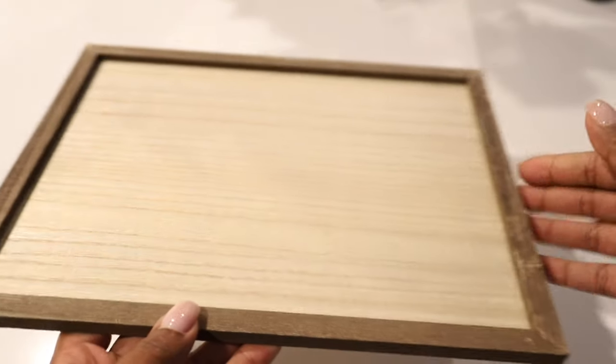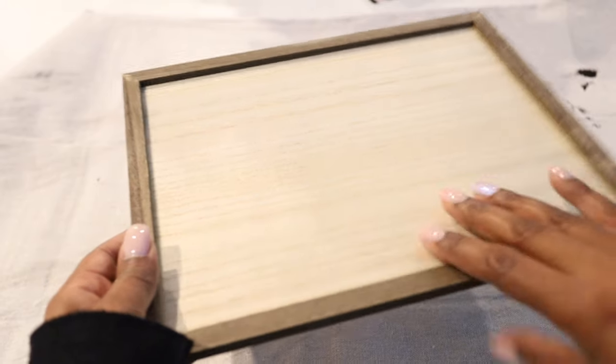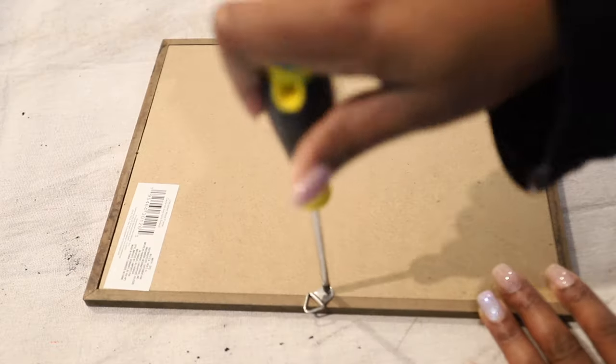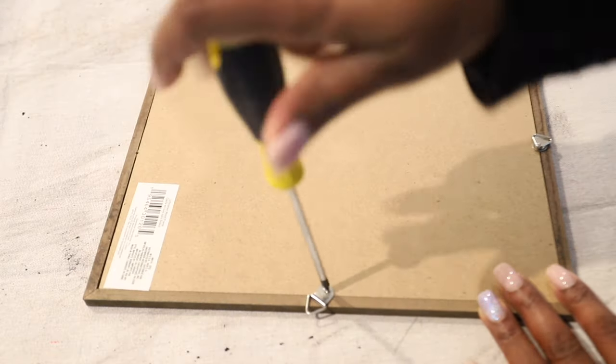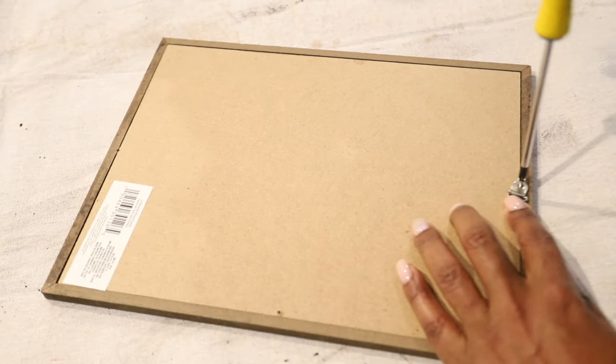While I was at the store, I saw this frame and I thought it would be cool to make this into a tray. So let's see how this turns out. The frame is originally intended to be placed on the wall, and I can tell this by it having a couple of hooks on the back of it. So I'm going to remove them.